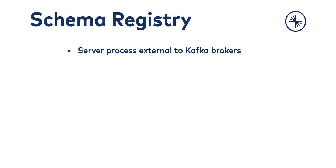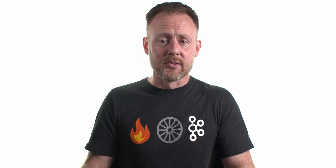Schema Registry is a standalone server process that runs on a machine external to the Kafka brokers, so it looks like an application — a producer or a consumer — to the Kafka cluster. Its job is to maintain a database of all of the schemas that have been written into topics in the cluster for which it is responsible. That database is persisted in an internal Kafka topic — this should come as no surprise — and it's cached in the schema registry for low latency access. It's very typical for an element of the Kafka ecosystem to be built out of Kafka itself, so we use a topic to store those schemas.